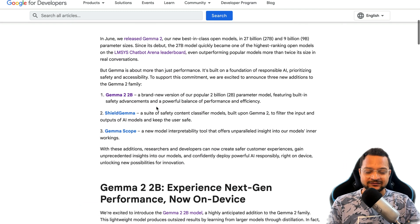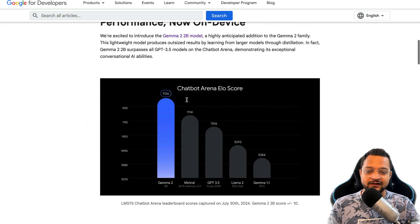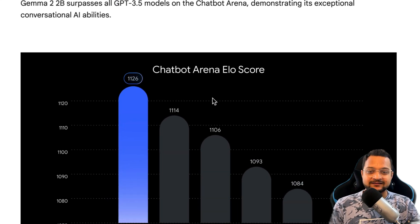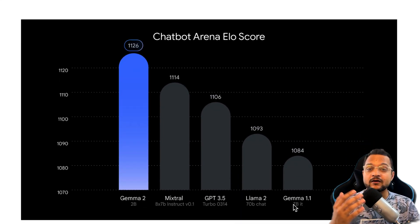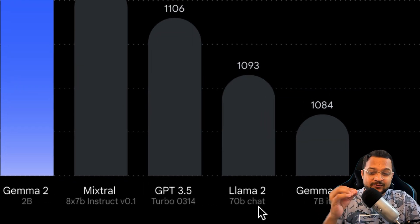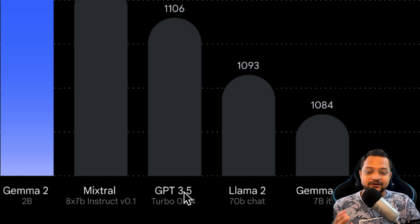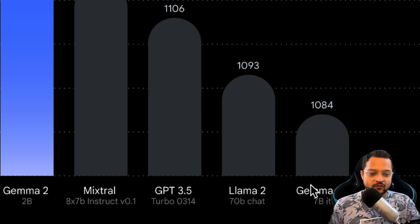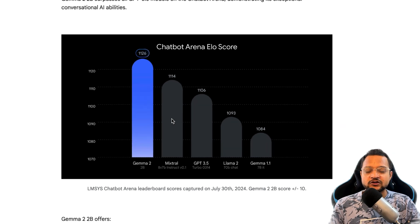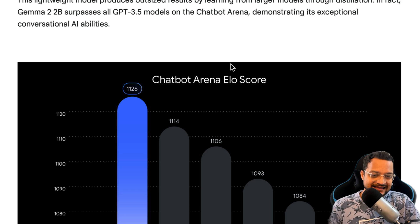Gemma 2 billion is really powerful — it is passing out every other model we have, even the bigger LLaMA 2 70 billion model. So how can a 2 billion model beat a 70 billion model, or even ChatGPT 3.5, Mistral, and the older Gemma 1.1? This comparison is not on any standard benchmark but on the Chatbot Arena leaderboard.